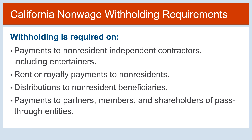Withholding is a prepayment of income or franchise tax due on the prepayments or distributions of California source income. Withholding is required on payments to non-resident independent contractors including entertainers, rent or royalty payments to non-residents, distributions to non-resident beneficiaries, as well as payments to partners, members, and shareholders of pass-through entities. Withholding may be waived or reduced when the proper forms are completed and submitted by payees. Now we will review the exemption, waiver, and withholding reduction requests available.